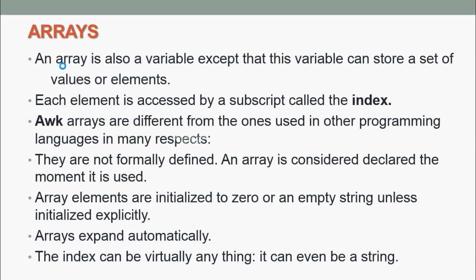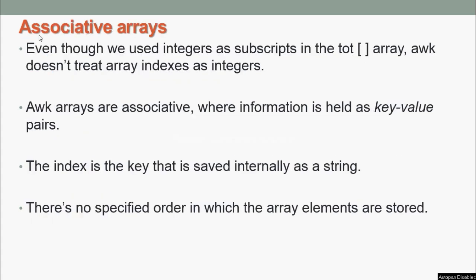AWK has arrays as well. An array is like a variable except that it can store a set of values or elements. Each element is accessed by a subscript called the index. AWK arrays are different from those used in other programming languages in many respects. They are not formally defined; an array is considered declared the moment it is used. Array elements are initialized to 0 or an empty string unless initialized explicitly. Arrays expand automatically. The index can be virtually anything; it can even be a string.